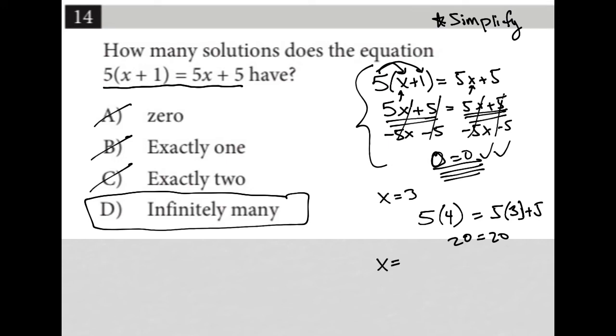We can then also plug in, let's say, x=2. So what happens when x=2? I'd have 5 times (x+1), which is 2+1, making that 3, equals 5 times 2 plus 5. And we'd see that both of those give me 15, which is also a true statement, meaning that it cannot be exactly one.